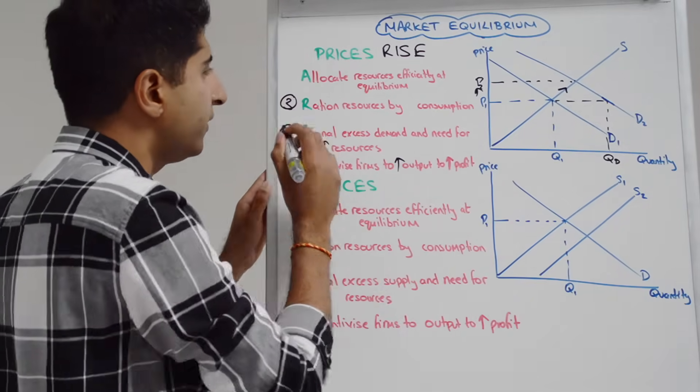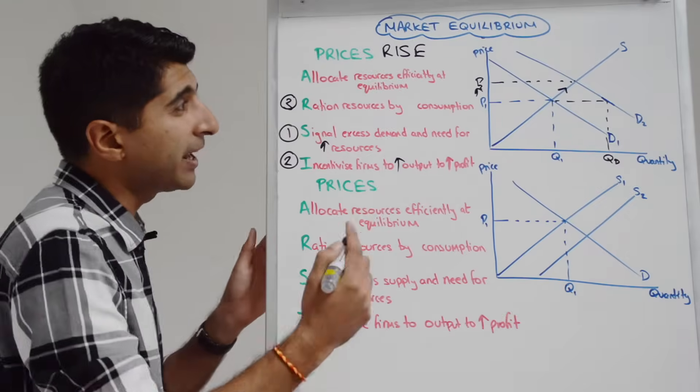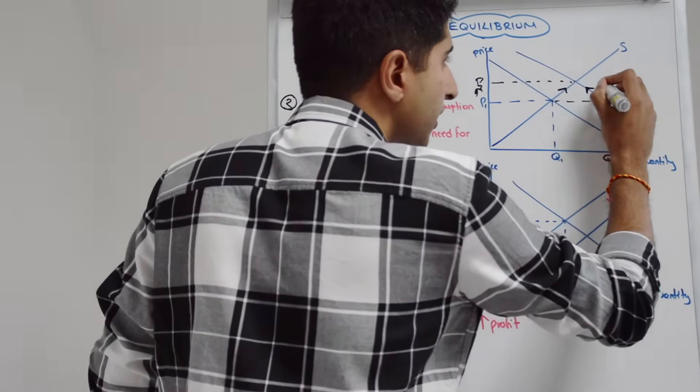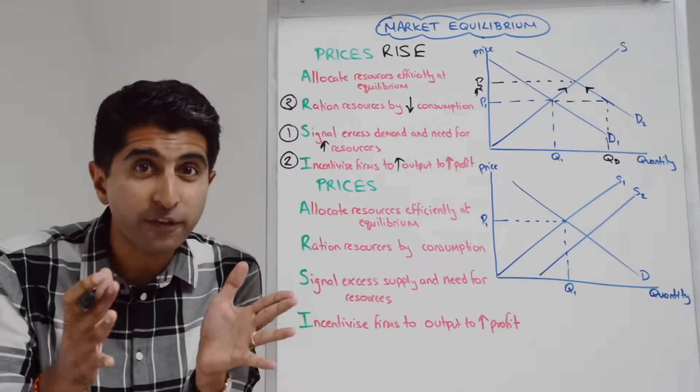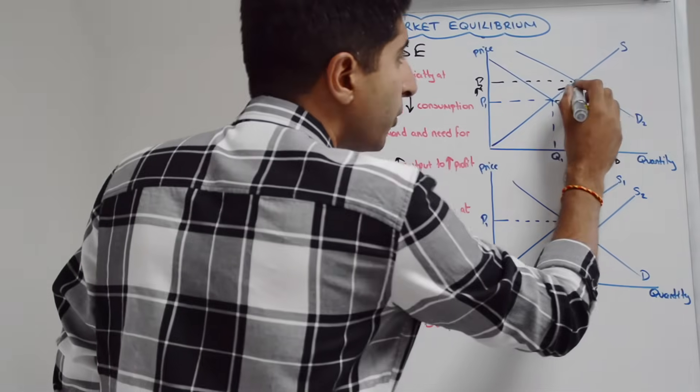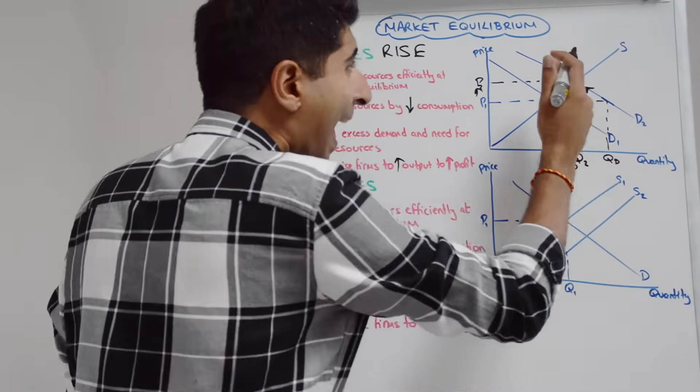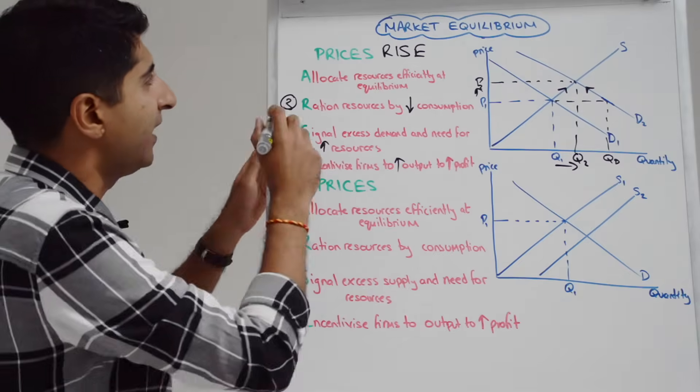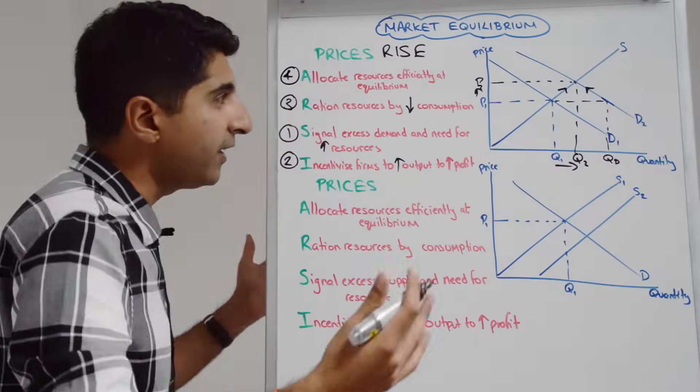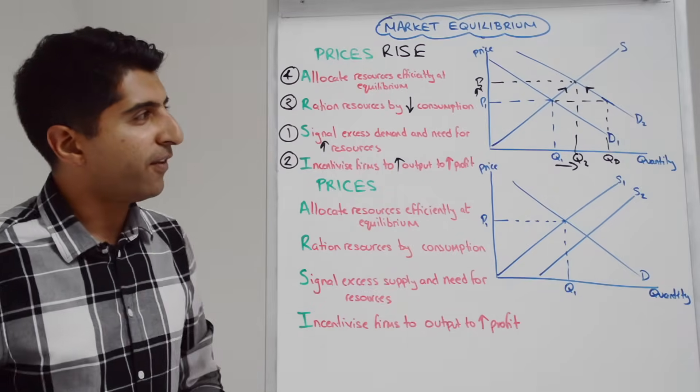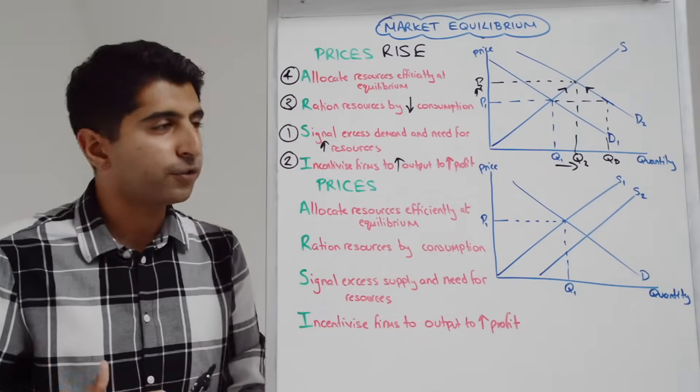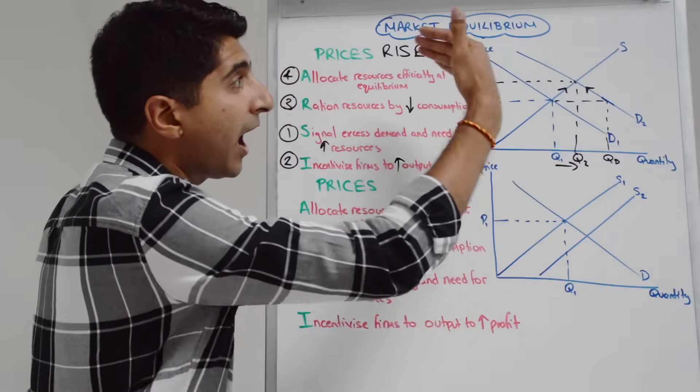Higher prices also ration scarce resources, in this case by discouraging consumption, we can show that via a contraction along the demand curve, put those last two effects together, where do we end up, we end up with quantity Q2, which is at equilibrium, which we know is allocative efficiency, awesome, awesome right, so we've achieved allocative efficiency, we've achieved equilibrium, the reallocation of resources is now with a higher quantity at higher prices.